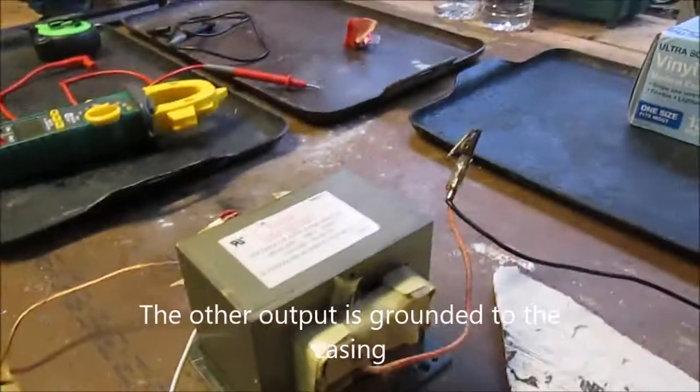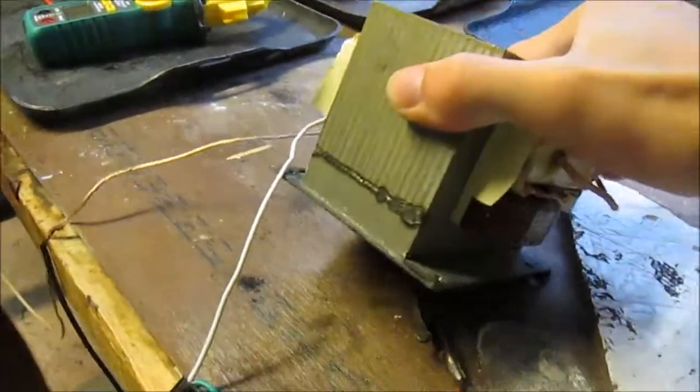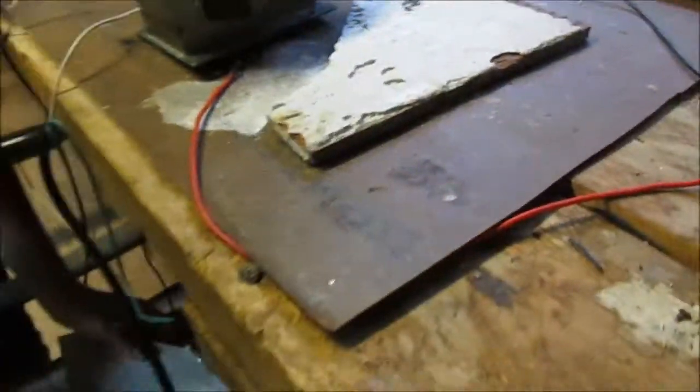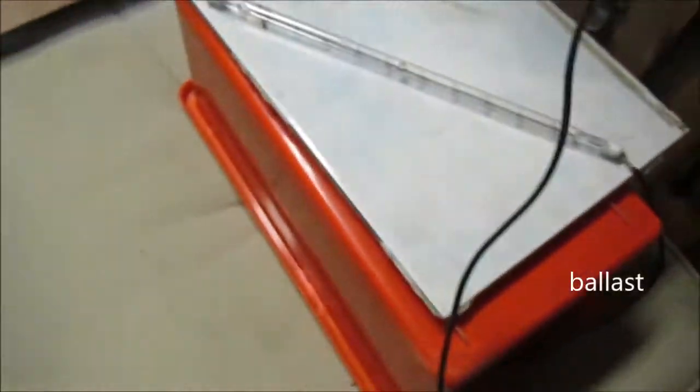And for the other output, we have the body of the transformer, and that's just going to be attached to this wire, which also has an alligator clip at the end. So, we've got the plug, which goes through the resistor into both the inputs.